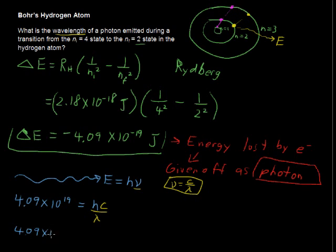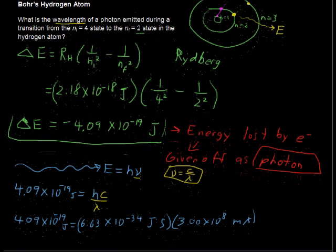We have 4.09 times 10 to the 19th, the negative 19th, equals Planck's constant, which is 6.63 times 10 to the negative 34th joule seconds, and I was getting a little sloppy here. I should put joules here, multiplied by the speed of light, which is 3.00 times 10 to the eighth meters per second, and then this is all divided by lambda.